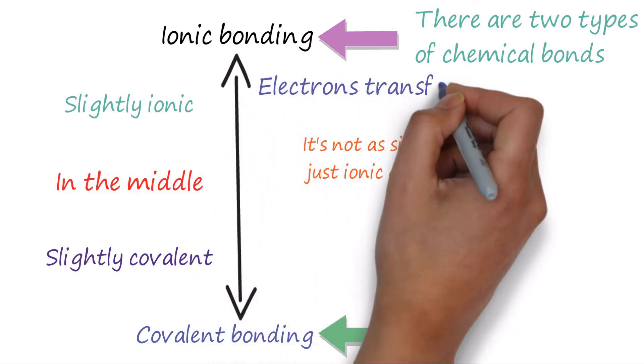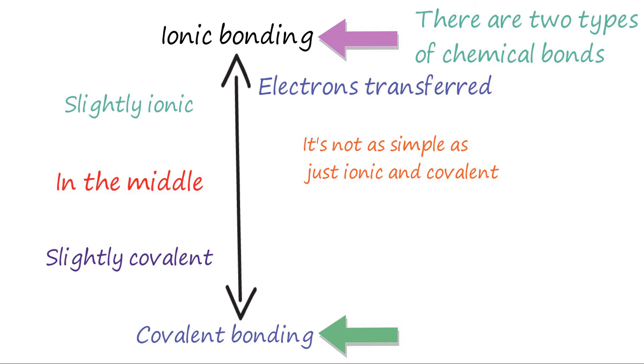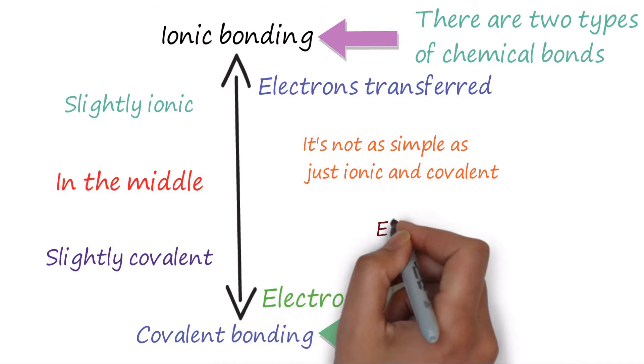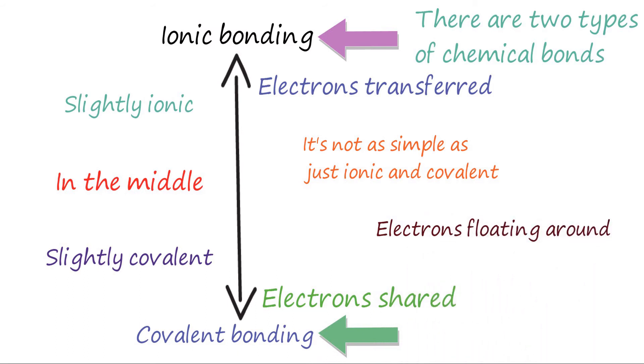As we already know, bonding is to do with electrons. That much is true. In ionic bonding, electrons are transferred from one atom to another. In covalent they are shared between them, and in the middle of the spectrum, again, they are in the middle.